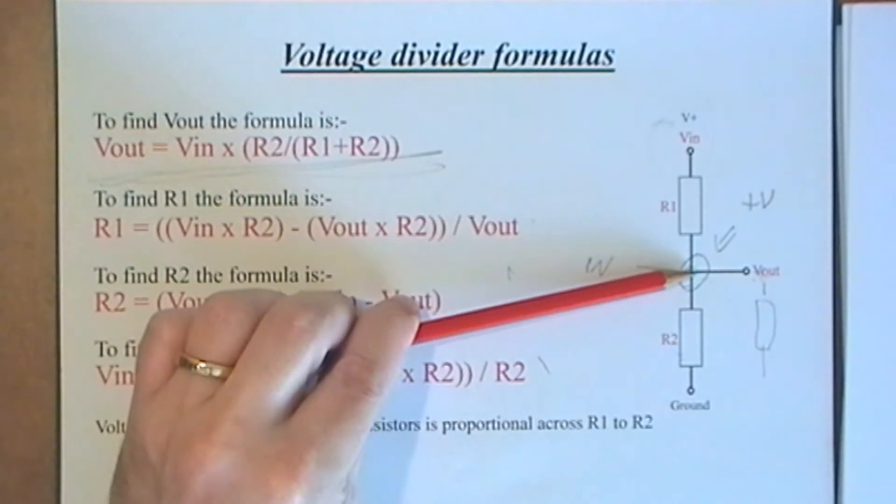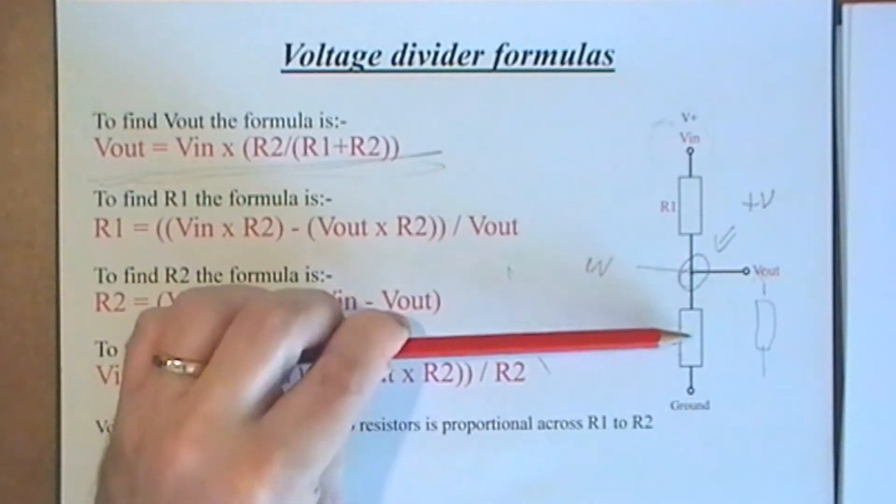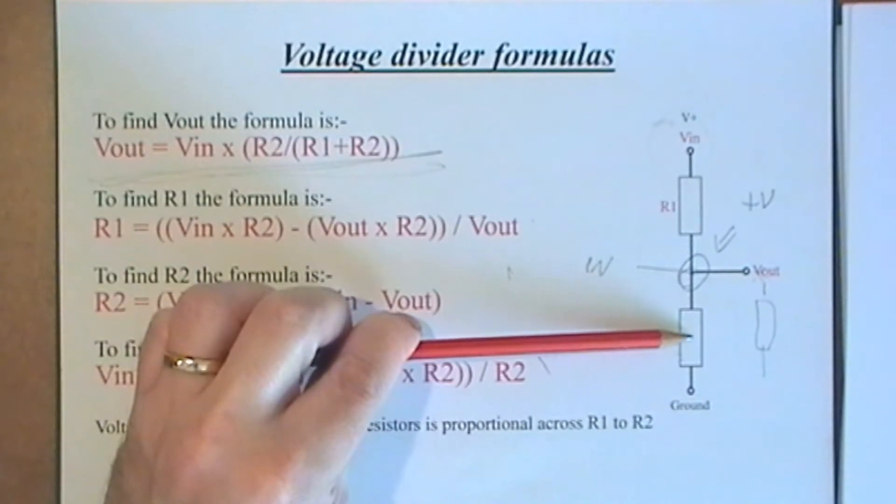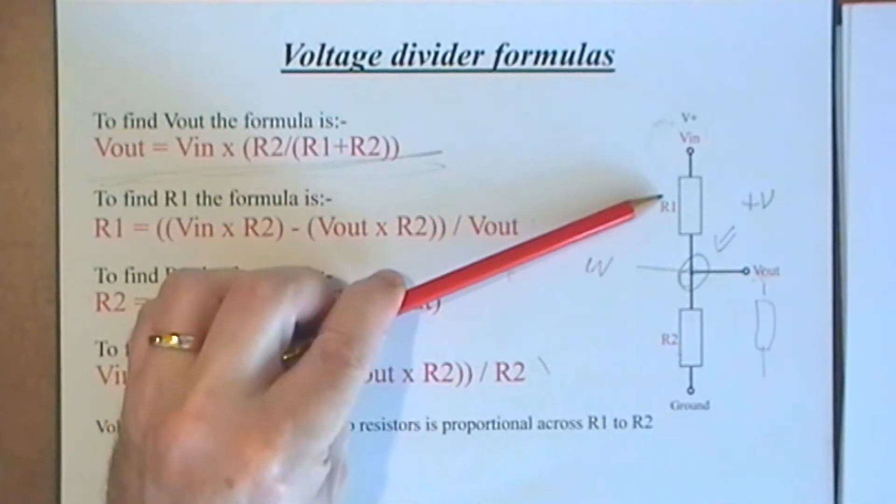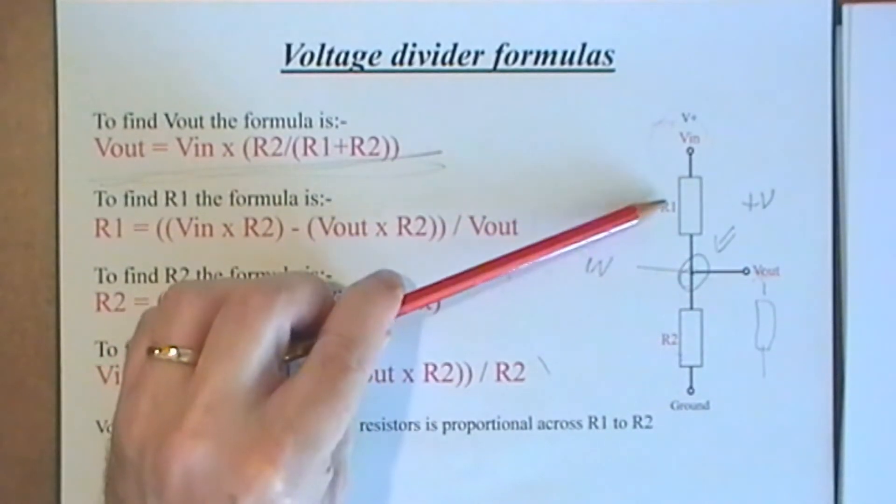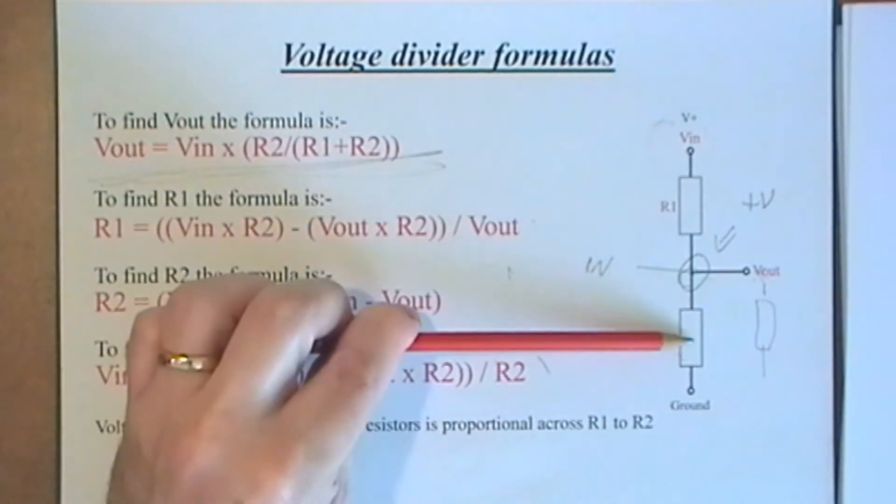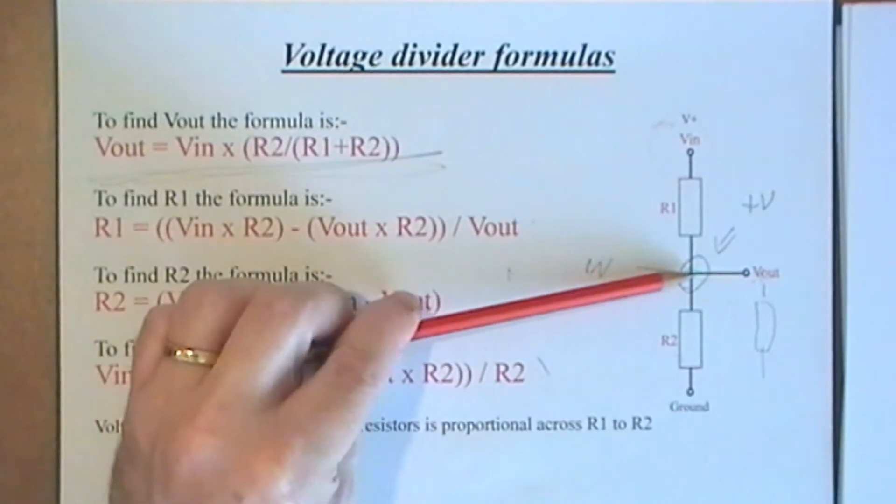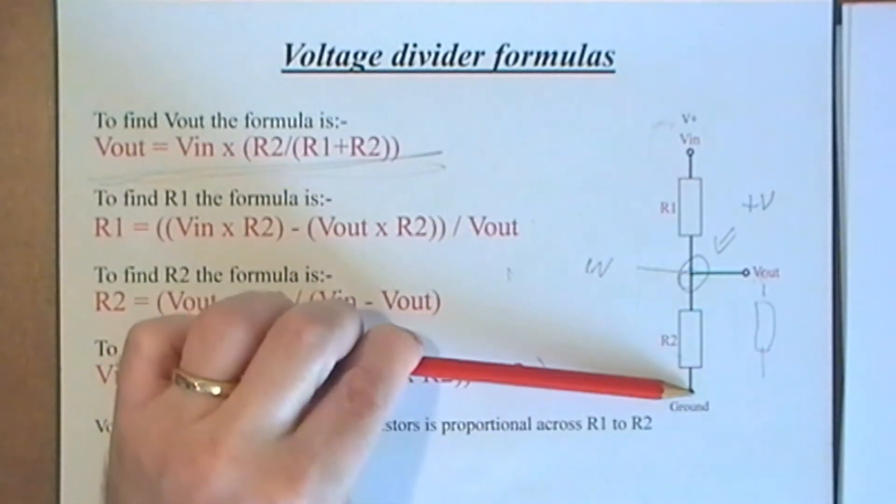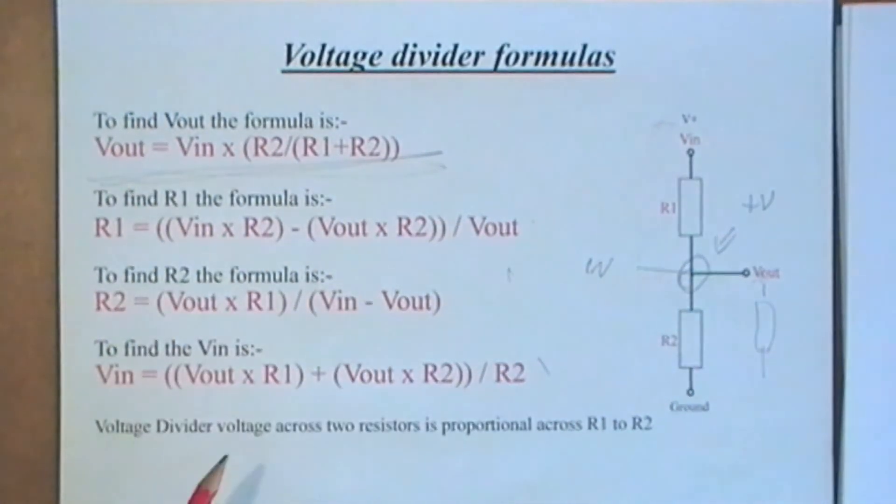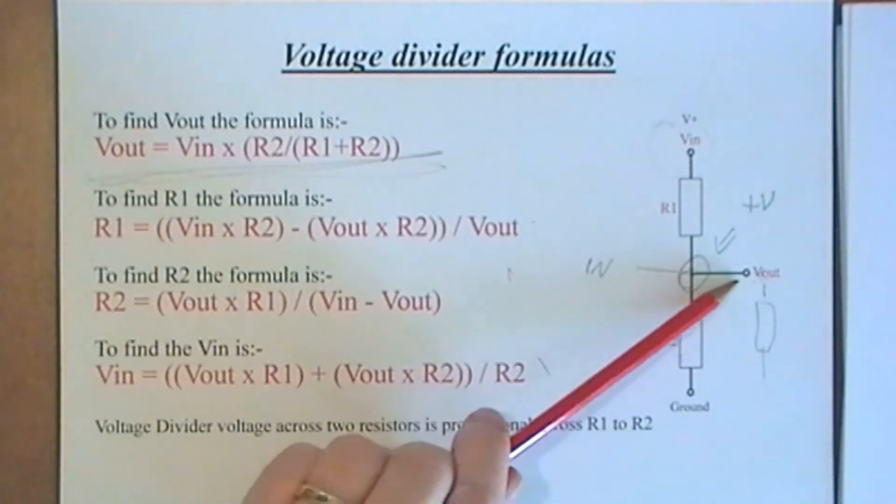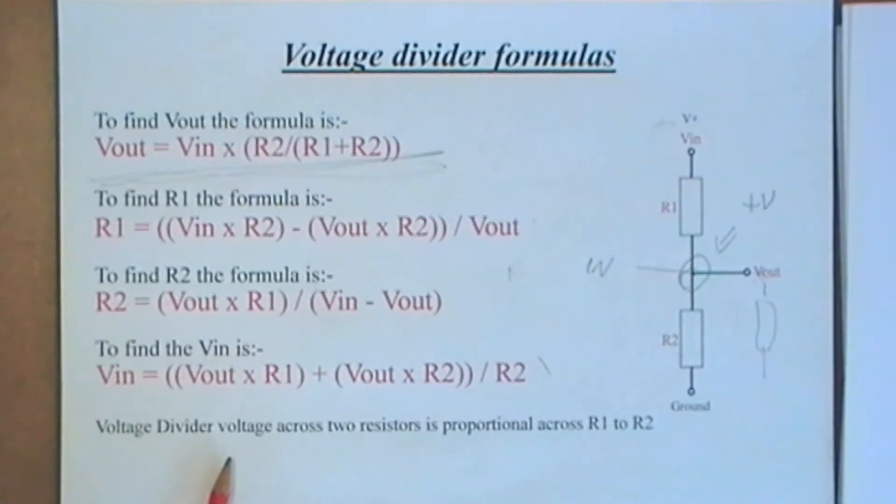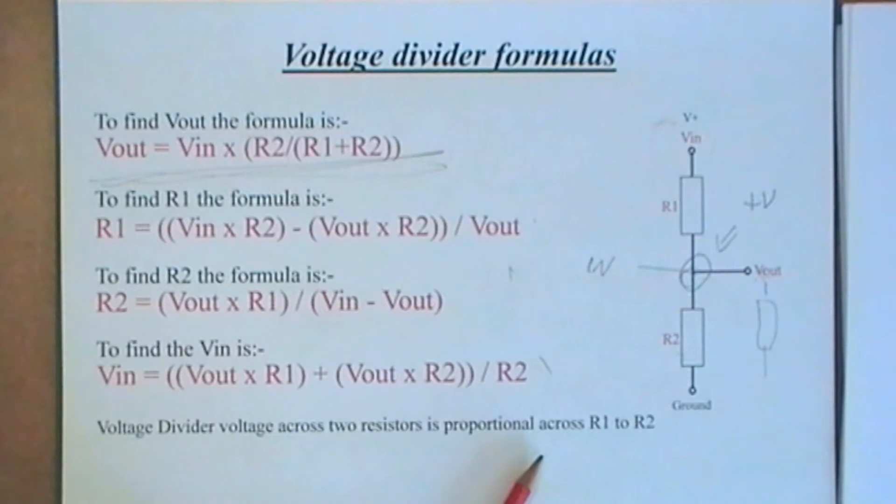Likewise, if you want 12 volts and you wanted 3 volts there, you could in theory put a 25 ohm resistor there and a 75 ohm resistor there, because that is three times the size of that, so you will drop the proportional amount of voltage across that one and then across that one.